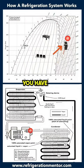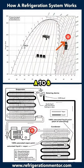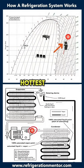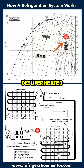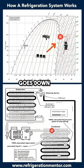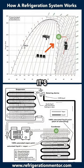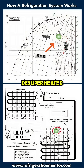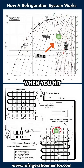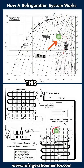As the compressor starts up, you have heat of compression — you go from A to B. At that discharge port, that's the hottest point. Anything past that is desuperheated, so as it goes down your discharge line it's a high-pressure, high-temperature gas being desuperheated on the way to the condenser.